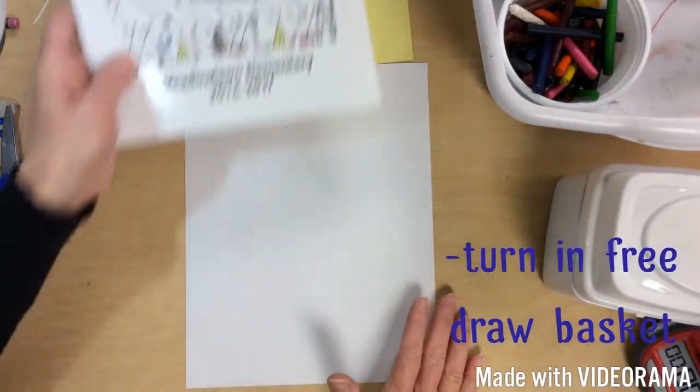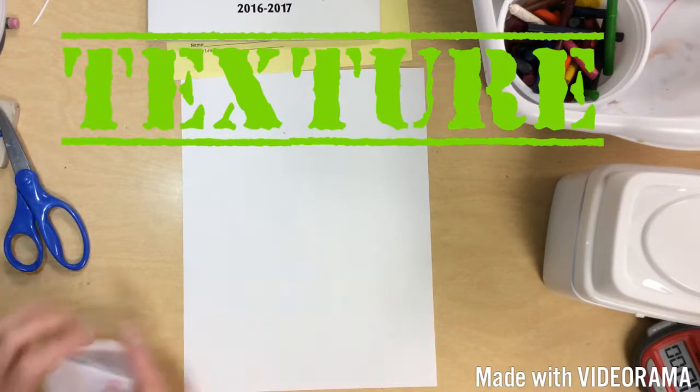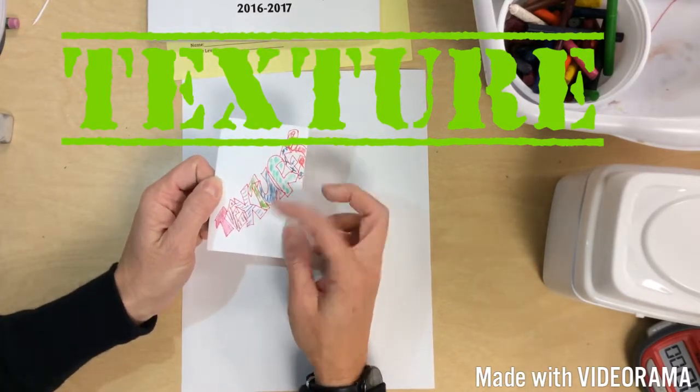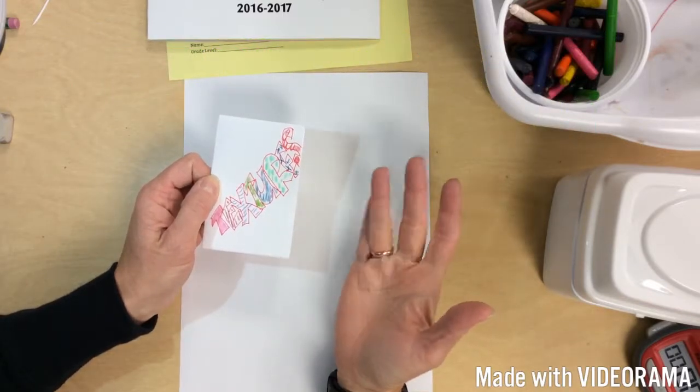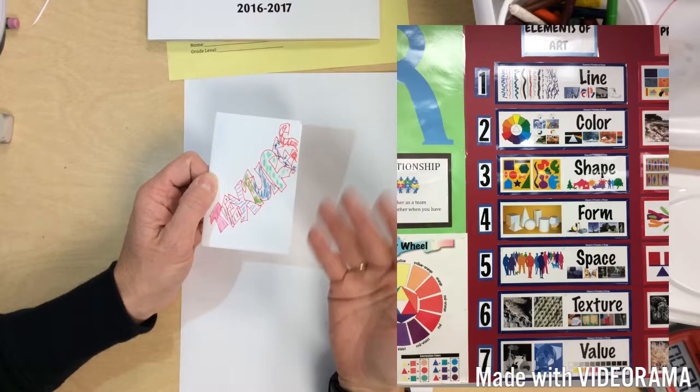So it's just something to remind you. What we're going to do today is we're talking about texture and you're going to get to make your own little texture book. See how I've written the word texture, T-E-X-T-U-R-E-S, and I've put some textures on it. We've already talked about the elements of art: line, color, shape, form, space, and our next one is texture.